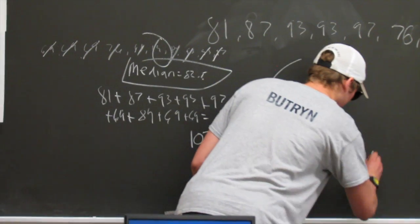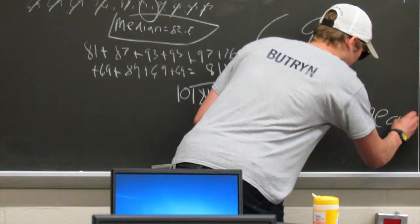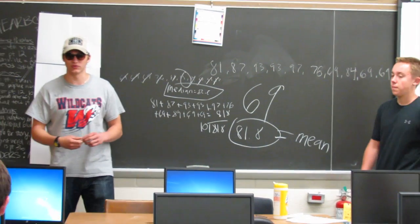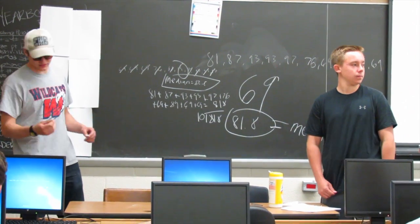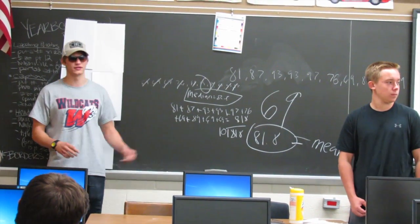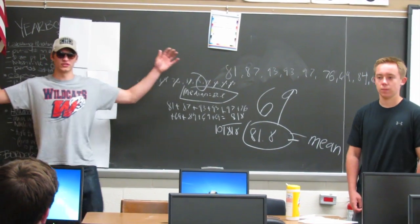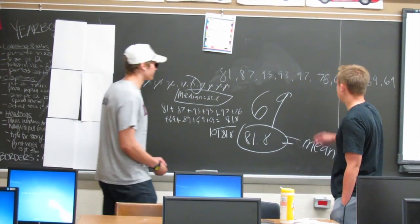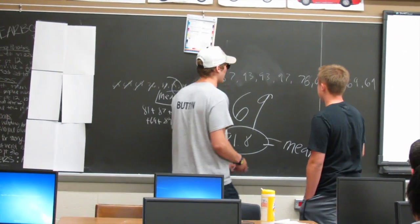So why is the median a better measure for skewed data? Why is the median? Because the median is not affected by outliers as much. The median is going to be pulled each way. Can we see an example of this? If you add an outlier, add an outlier.